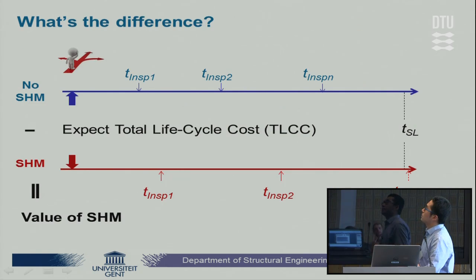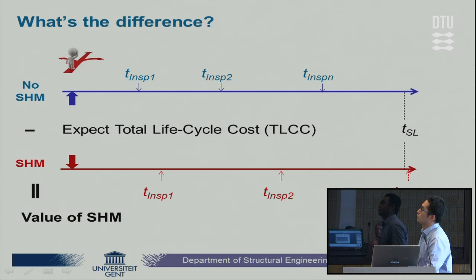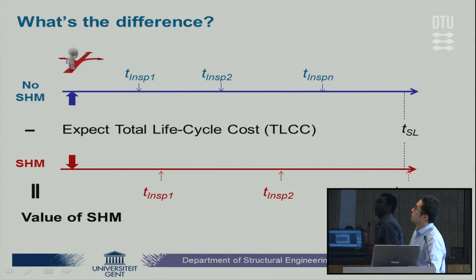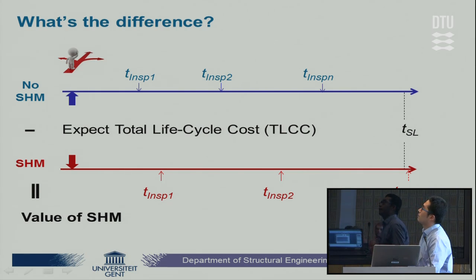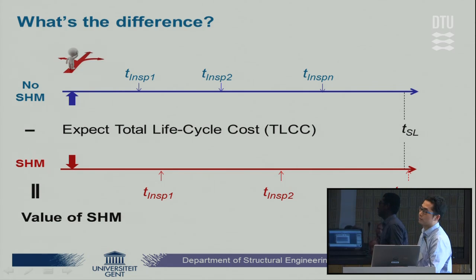The second objective is to determine the difference of implementing an SHM strategy. Because provided more information by SHM, the decision maker will have a totally different inspection planning for the structure. This will lead to a change of the expected total lifecycle cost, and the difference can be calculated as the value of SHM.